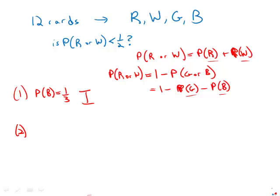Statement number two tells us the probability that a person will select red is one-sixth. Probability of red equals one-sixth. Just knowing that and nothing else is insufficient, we cannot answer the question.